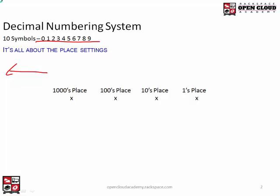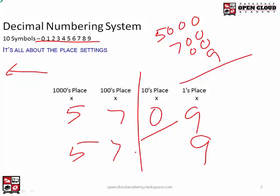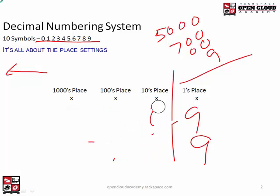Let's do one more. Take the number 5709: five times a thousand gives you 5,000 — that's five thousands, seven hundreds, no tens, and nine ones. You add that together and you get 5,709. The absence of a place setting is just as important as having a number there. You can't just write five, seven, nine — there has to be something indicating there isn't any of that place setting.